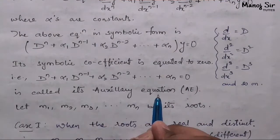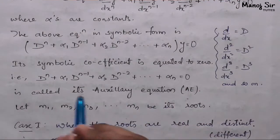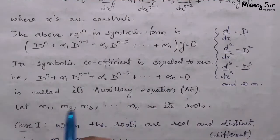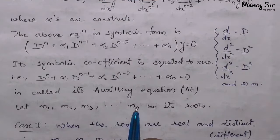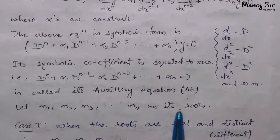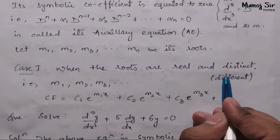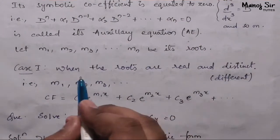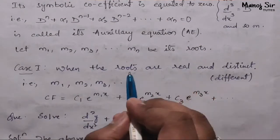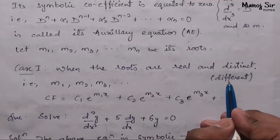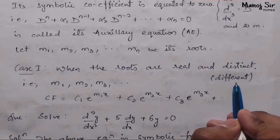On solving this auxiliary equation, let m₁, m₂, m₃, … up to mₙ be its roots. Now we come to the first case — when the roots are real and distinct. Real means the numbers are real, and distinct means they are all different from each other.